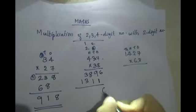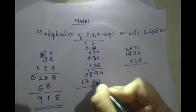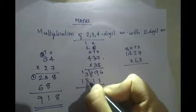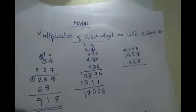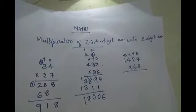Now we will add the numbers. 6, 9 plus 1 is 10, write 0, carry 1. 8 plus 1 is 9, plus 1 is 10, write 0, carry 1. 3 plus 3 is 6, plus 1 is 7, and 1. So your answer is 17,006.